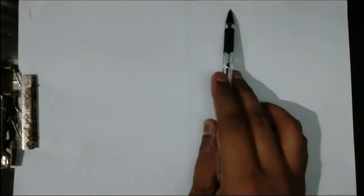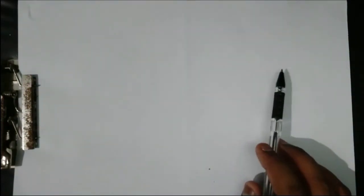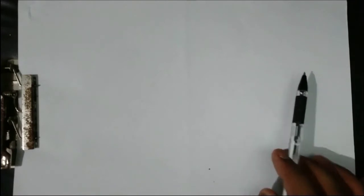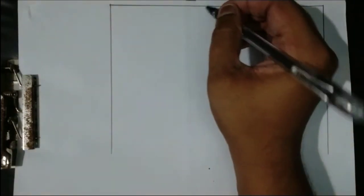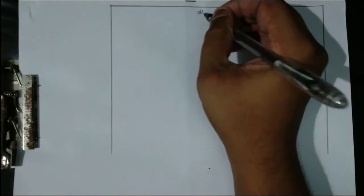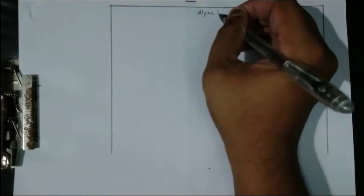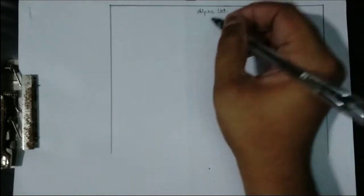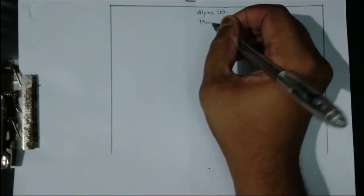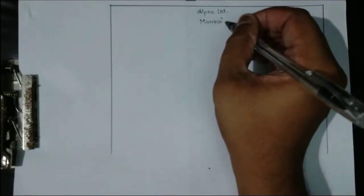This step of drawing three lines is common for all source documents. After drawing the frame, the first thing to write is the name of the company making the debit note. I am going to assume the company name to be Alpha Limited, and write Mumbai as the location — you can write the entire address if it is provided.